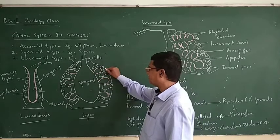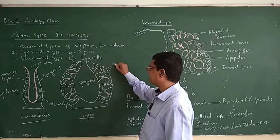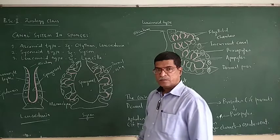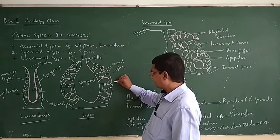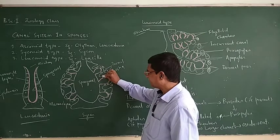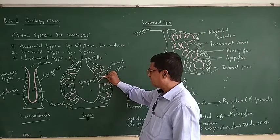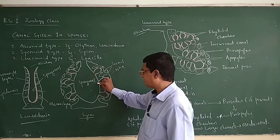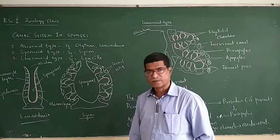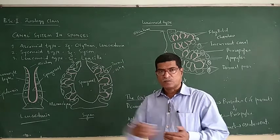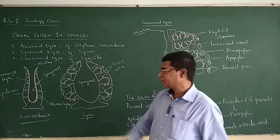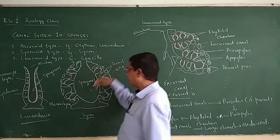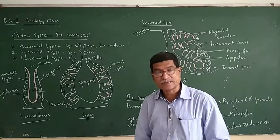Water current flows through the dermal ostia into the incurrent canal, then through apopyle into the flagellated chamber, and into the spongocoel. The flow of water is not straight as in the asconoid type — in the syconoid type it takes more turns.